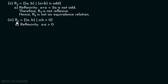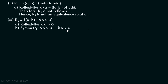Let's check whether R3 is symmetric. If (a, b) belongs to R3, then (b, a) must belong to R3. This means if a times b is greater than zero, then b times a must also be greater than zero. We are just changing the order of multiplication, so this is obviously true. Therefore, R3 is symmetric.